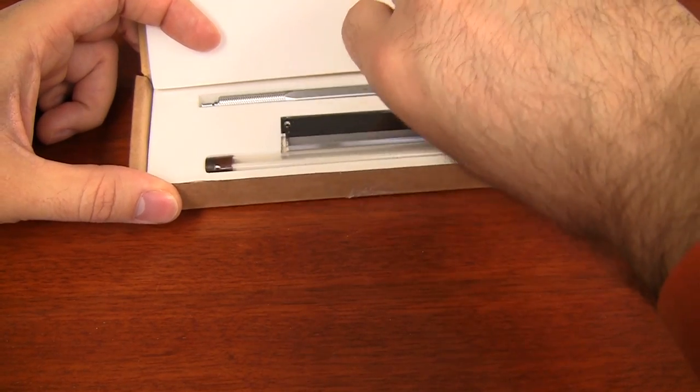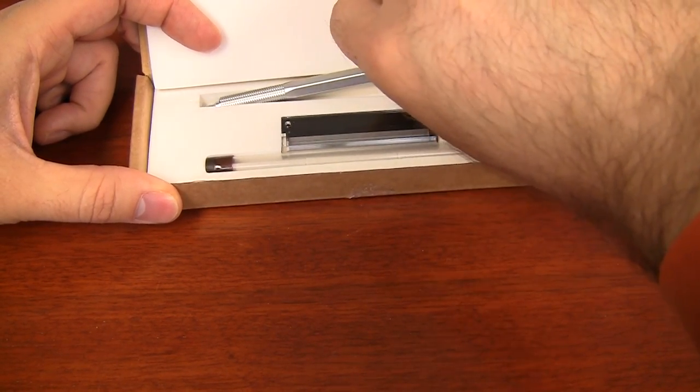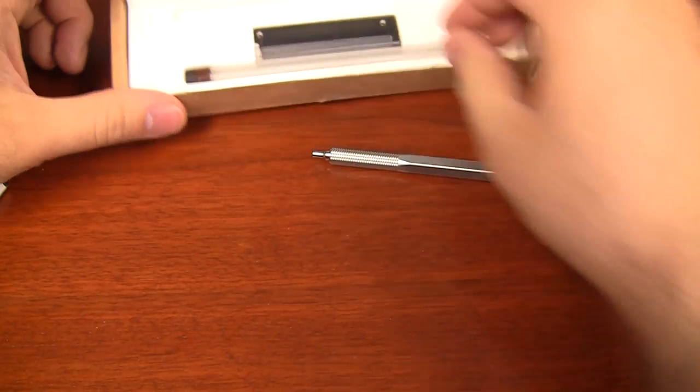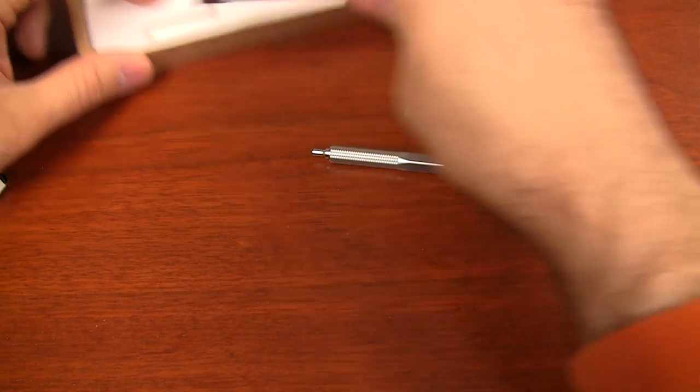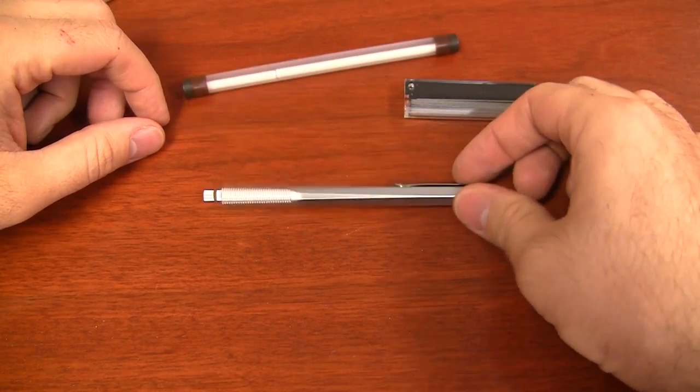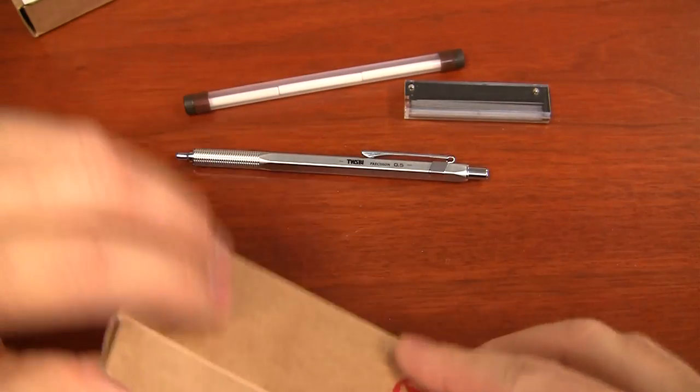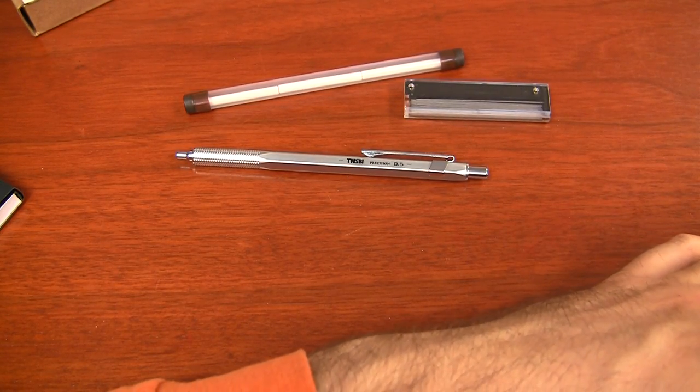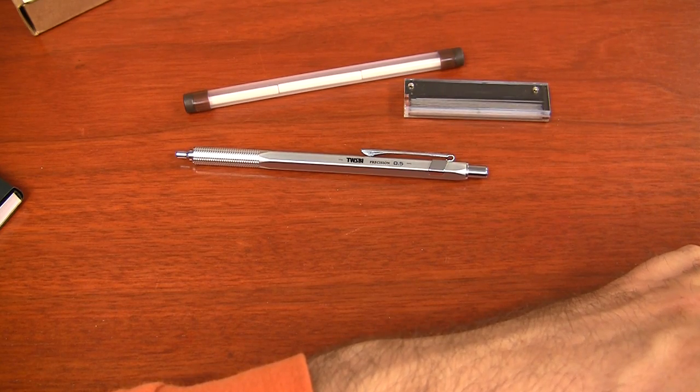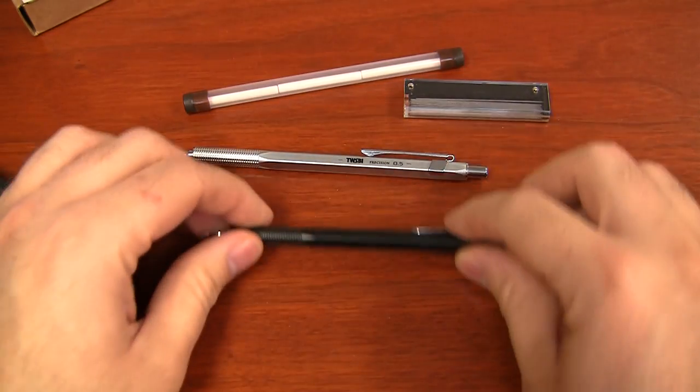There are eight different versions of the TWSBI mechanical pencil. There's two different colors. There's a silver and a black, which I'll show you the black over here. It comes in a 0.5 and a 0.7, and it also comes in either a retractable or a fixed tip.